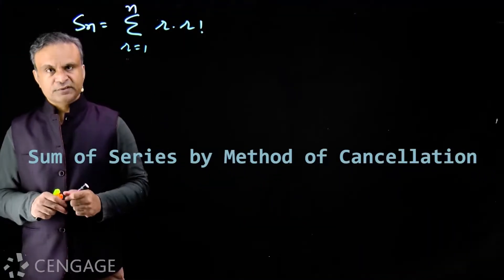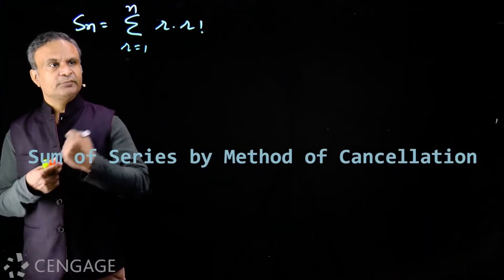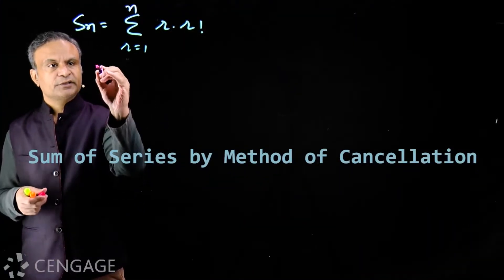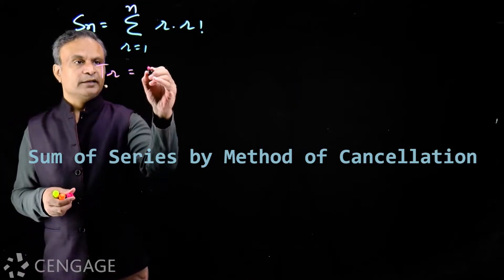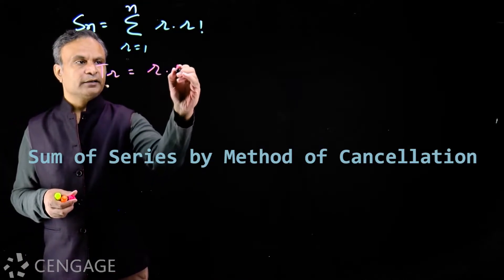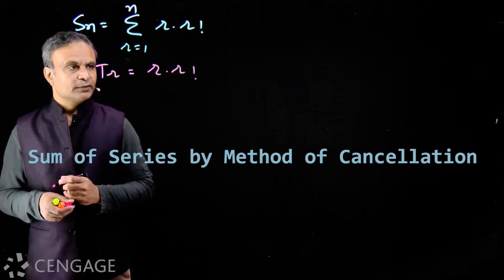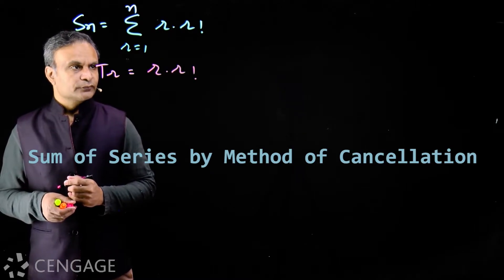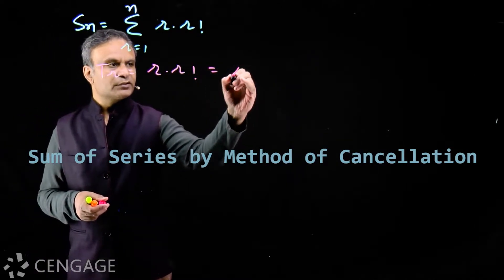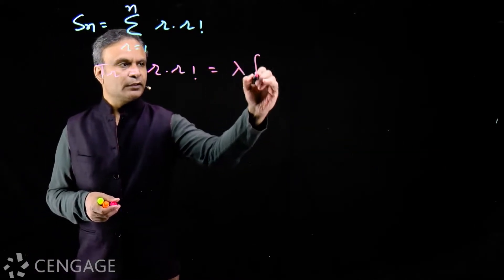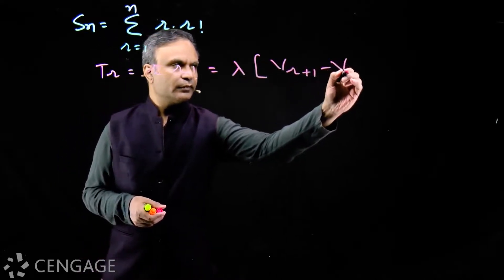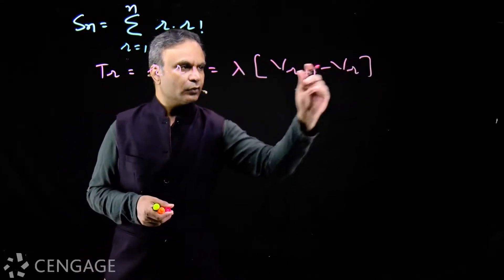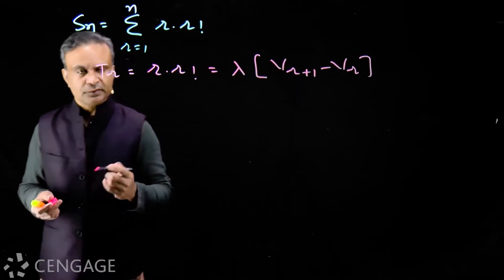Now let us find the sum of this series. Here the term Tr contains factorial — Tr is r into r factorial. We will write this term in this form: lambda multiplied by v(r+1) minus v(r), or v(r) minus v(r+1).